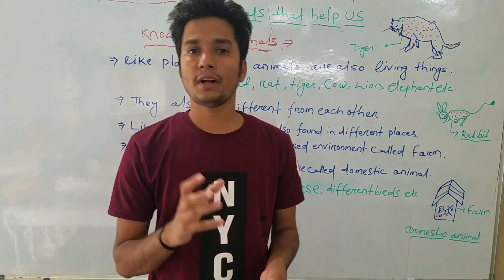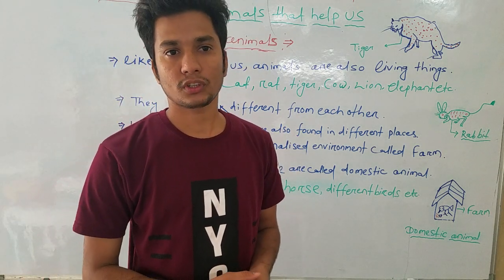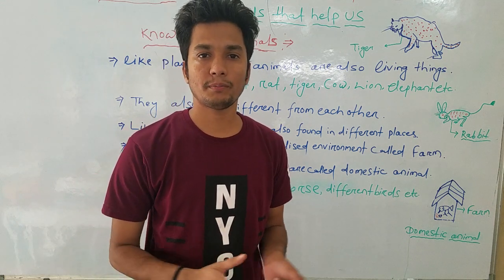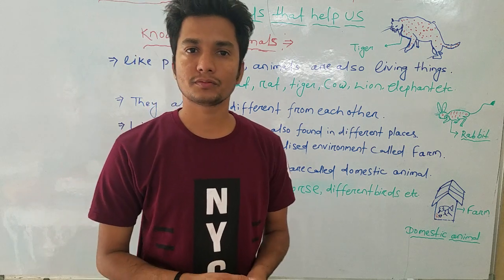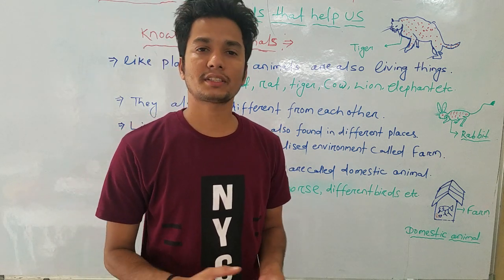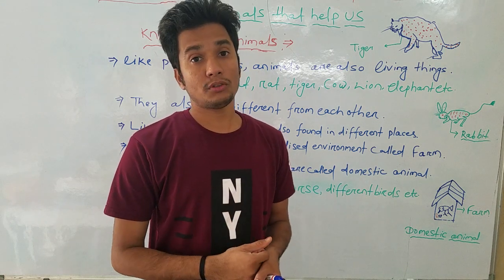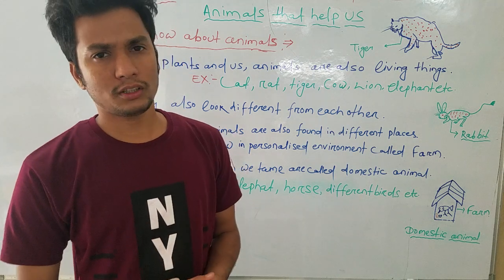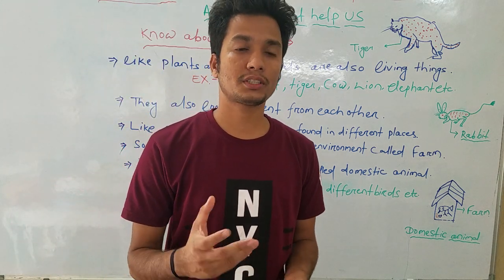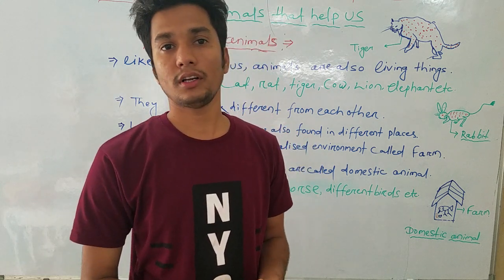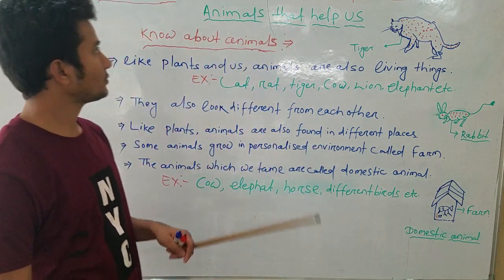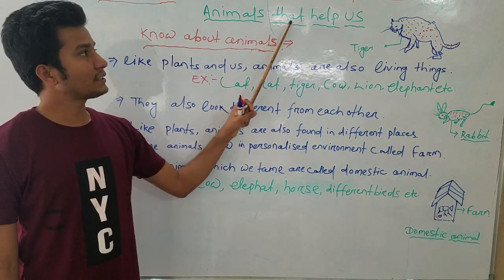Like plants, animals are also different. Plants grow in different places — it may be a desert area, mountain area, or other places. Like this, animals can also be found in different places. So before we start on how animals are helpful for us, today we will learn some facts about animals. This is Chapter 3: Animals That Help Us.